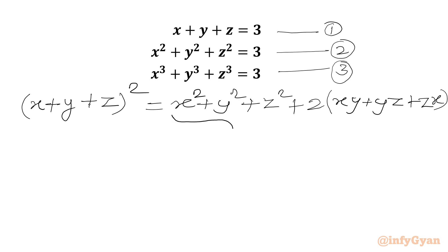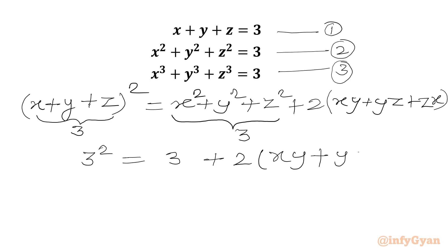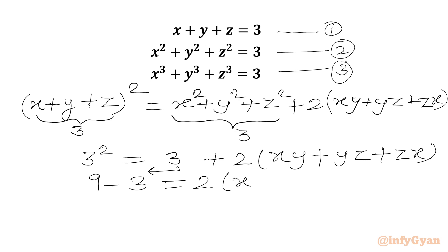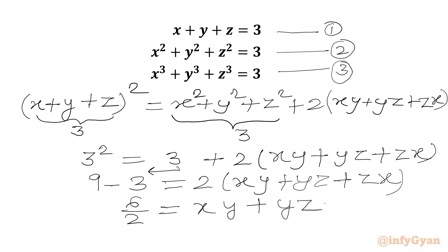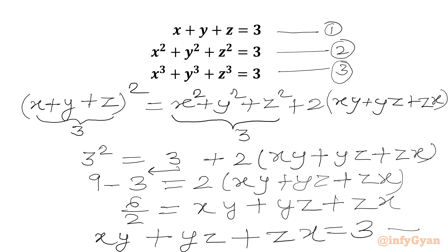Now from equation 2, we are going to put the value 3 here. From equation 1, this bracket value we will write as 3. So I can write 3 squared equals 3 plus 2 times xy plus yz plus zx. So 9 minus 3 equals 2 times xy plus yz plus zx. Dividing both sides by 2 gives us equation 4: xy plus yz plus zx equals 3.